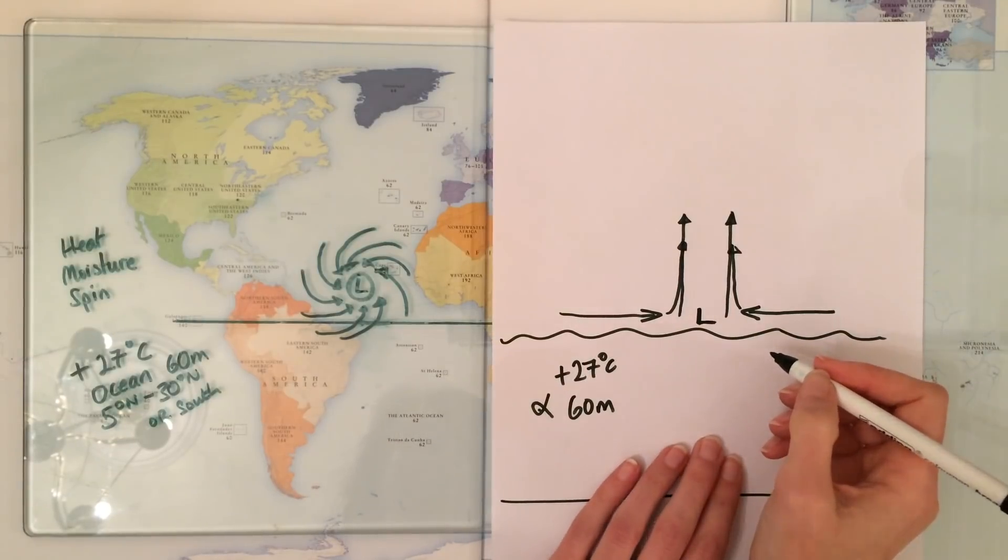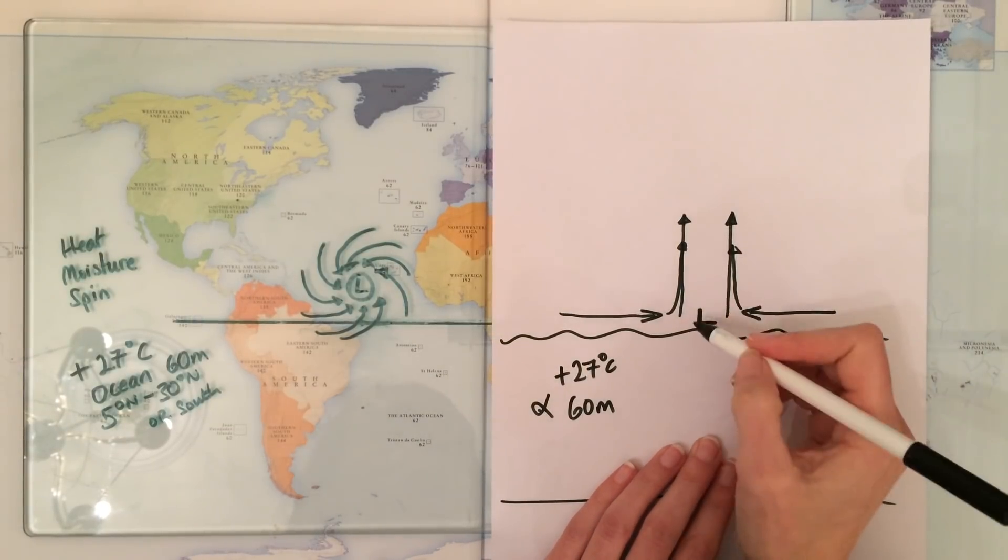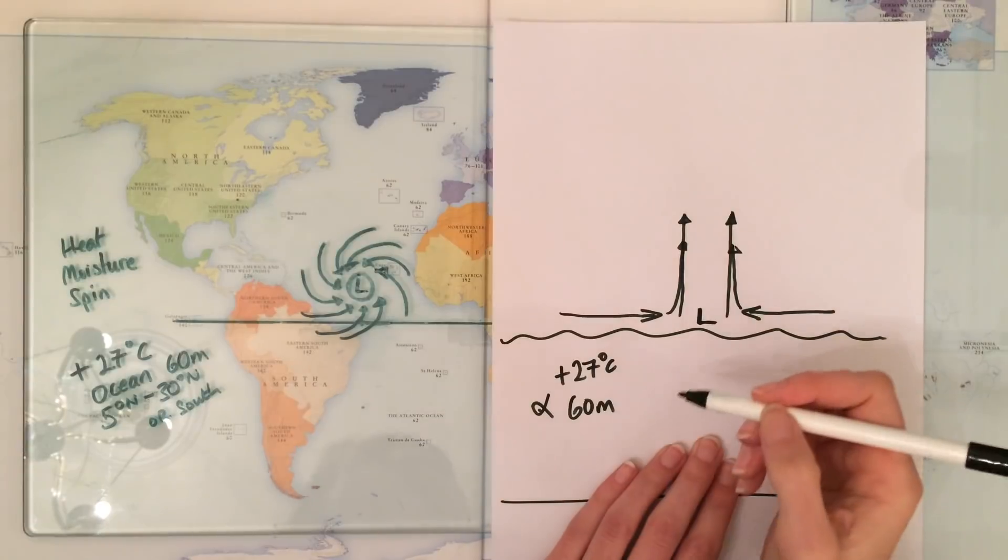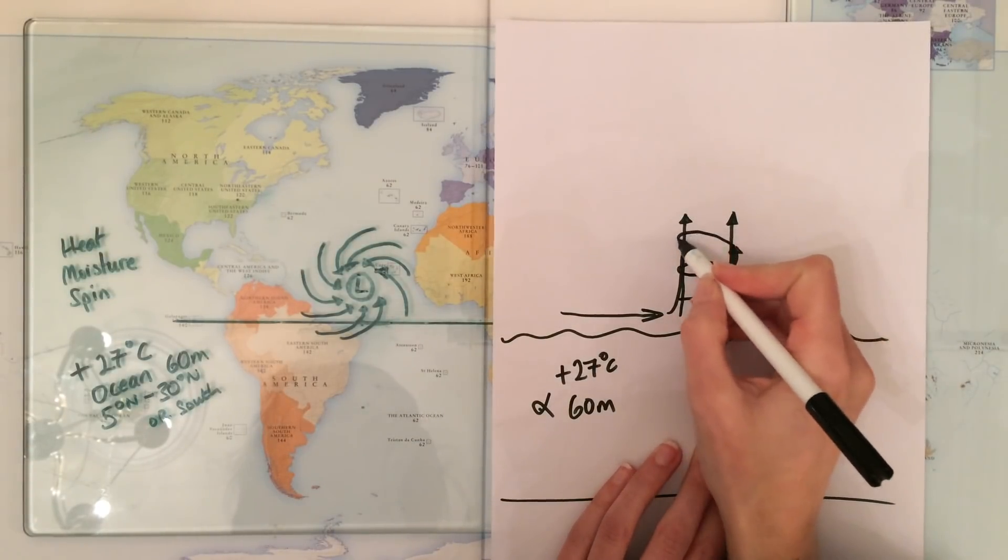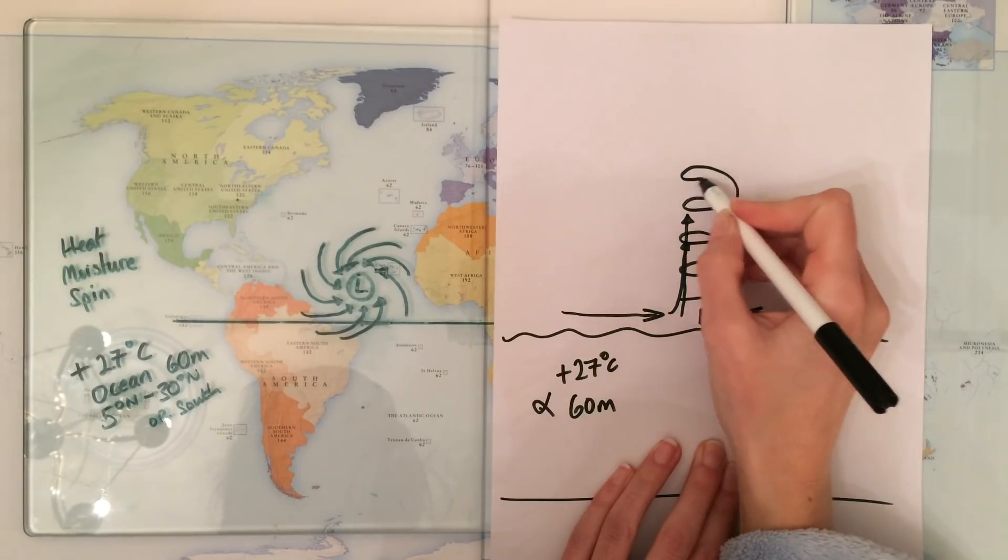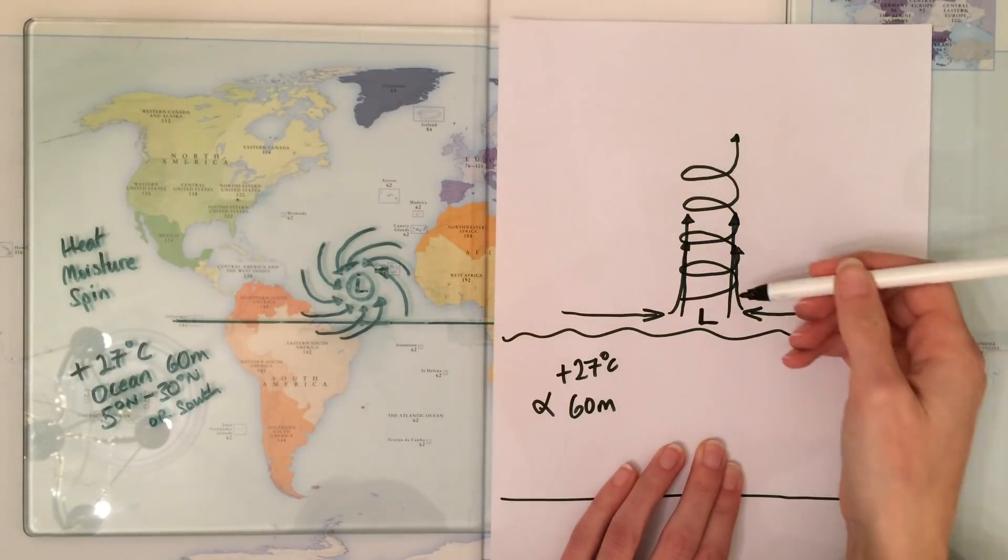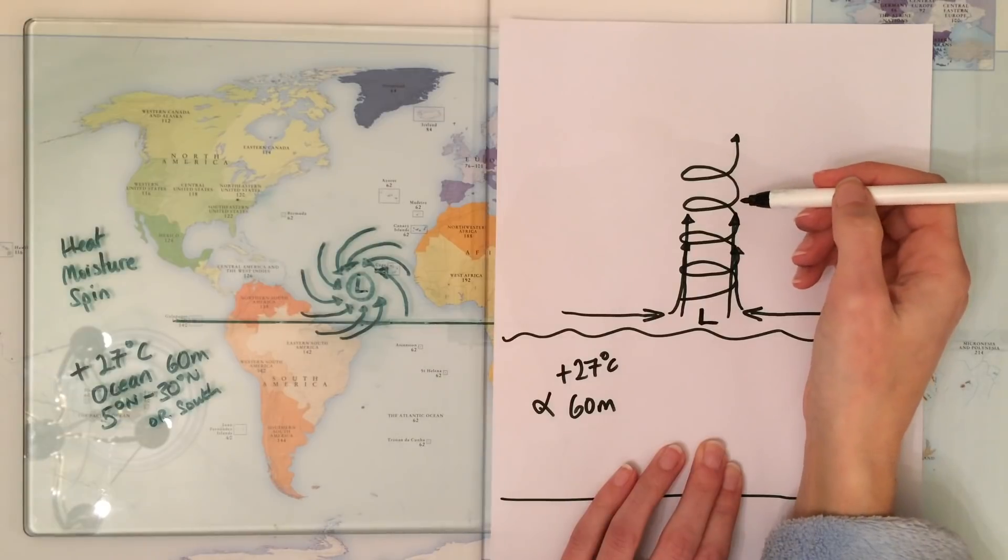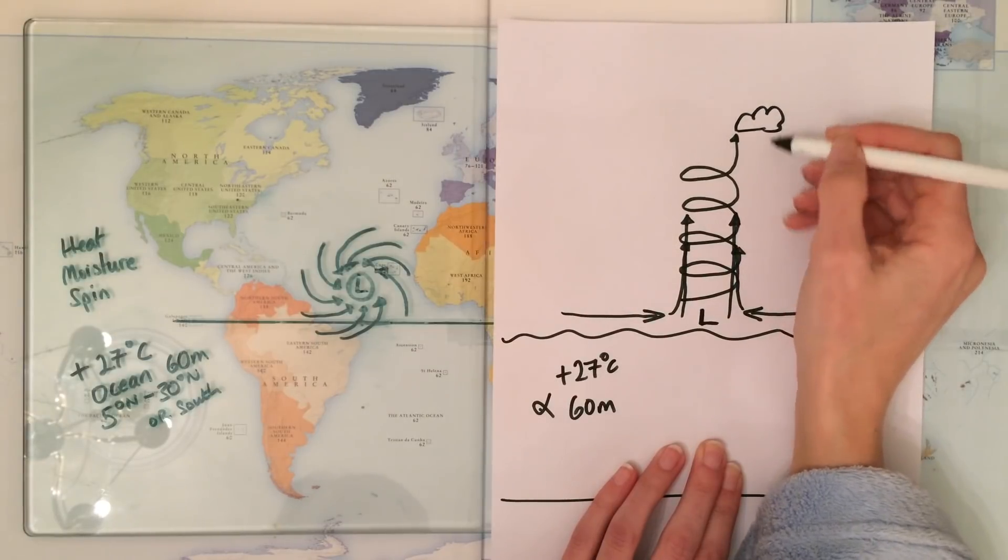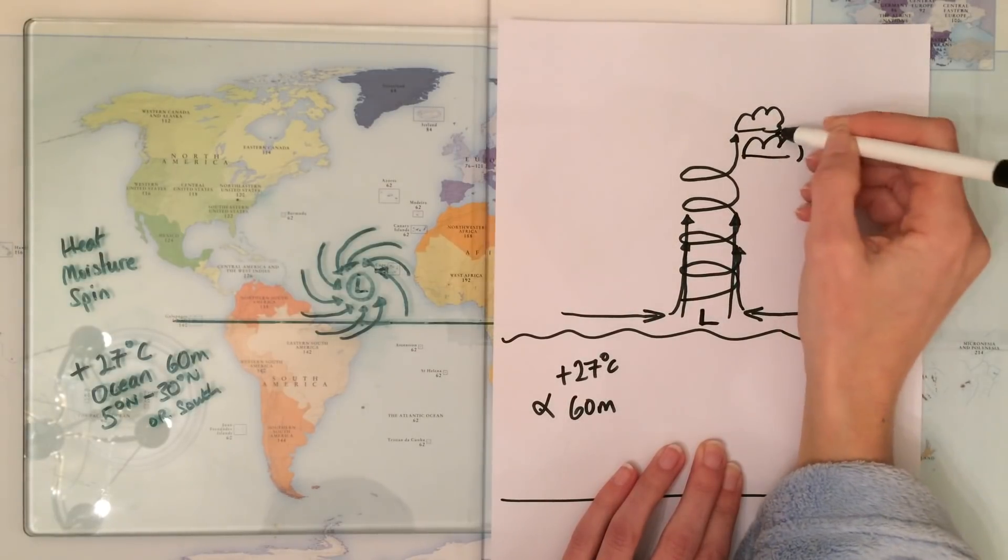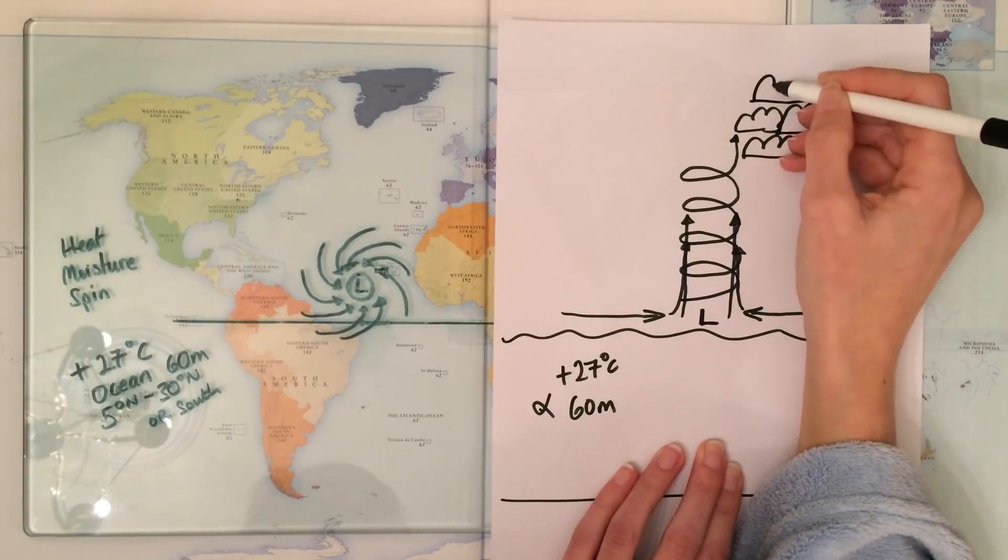As that air is rising, it's not just rising straight up, it's spinning because of the earth's Coriolis force. The air is rising up and spinning at the same time. As the air rises, it cools down, and any moisture in it will condense, which will form droplets and will form cloud. This keeps happening deep into the atmosphere.